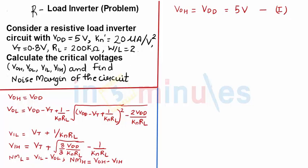Now before we go ahead and find VOL let's understand that my transconductance KN is given by KN' into W by L. KN' is given to us as 20, W by L is 2. So that gives me 40 micro ampere by volt square.